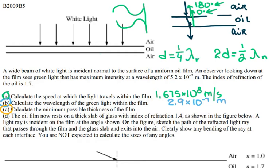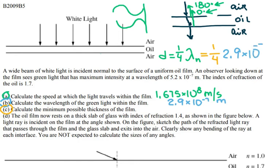The thickness of the oil equals one quarter of the wavelength in the medium. The wavelength in the medium was found to be 2.9×10⁻⁷ meters, so the minimum thickness of the film equals 0.725×10⁻⁷ meters.